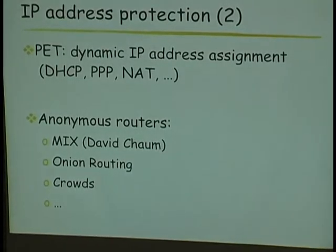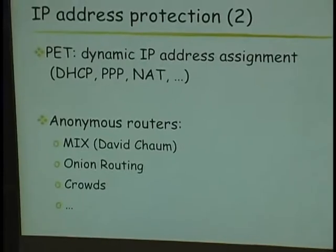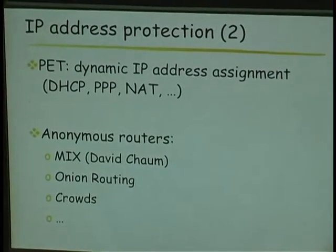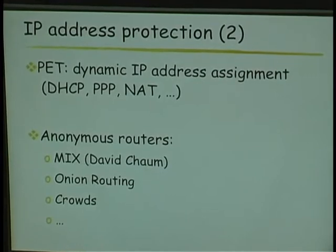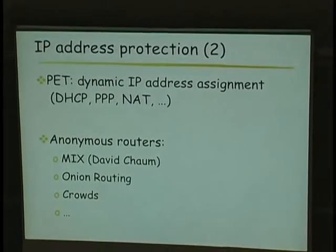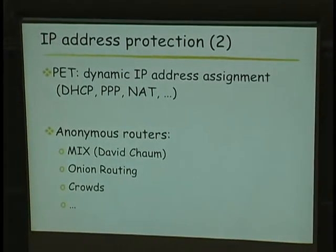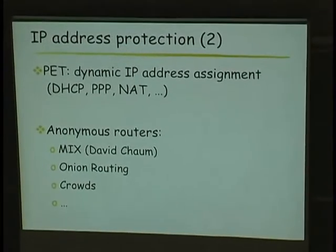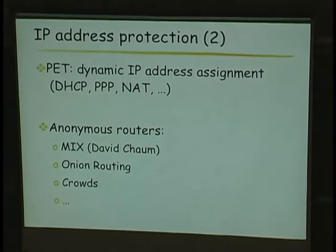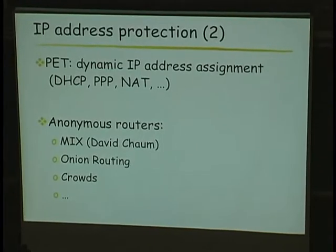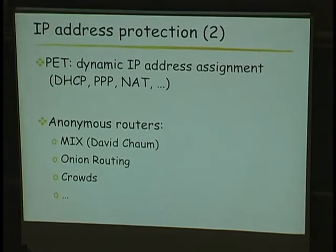How to protect IP addresses? The first way is to use dynamic IP addresses — for instance DHCP, PPP, or NAT (network address translation) — services which can easily generate dynamic addresses so you can no longer link an address to a specific person. There are also what are called anonymous remailers, which make transitions of addresses. This idea was first proposed by David Chaum through what he called MIX networks, which have been implemented in several variants such as onion routing, Crowds, and so on.